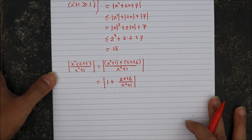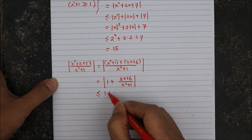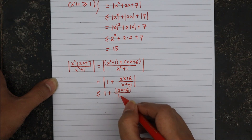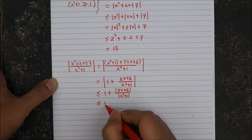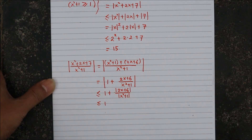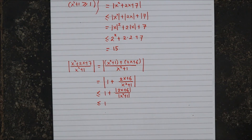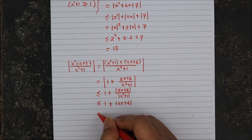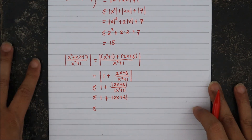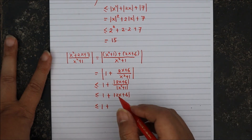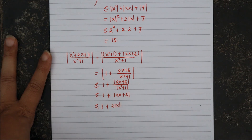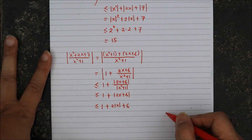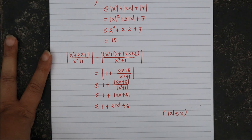Now we can use again the triangle inequality. This is less than or equal to 1 plus the absolute value of 2x plus 6 divided by x squared plus 1. Using the similar method, if we divide by x squared plus 1 that makes our expression smaller compared to dividing by 1, so this is still less than or equal to 1 plus the absolute value of 2x plus 6. Then apply again the triangle inequality to 2x plus 6, giving 1 plus the absolute value of 2x, which is twice the absolute value of x, plus 6. Now we use the fact that the absolute value of x is less than or equal to 2, as given.